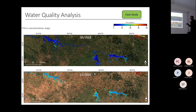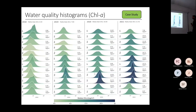With these algorithms, we produced 48 maps of this kind for chlorophyll and also for turbidity. Then we passed to the analysis, proposing a visualization using histograms.